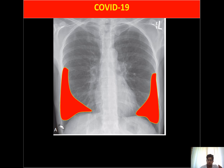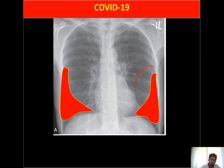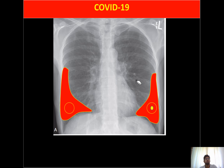COVID-19 will present as diffuse consolidation — consolidation means the air space is filled with fluid, so instead of appearing black (air), it looks whiter. The consolidation is usually bilateral, involving both lungs. It can also have a nodular appearance, and nodular with cavitation is possible, but the most common presentation is ground glass opacity, followed by consolidation.